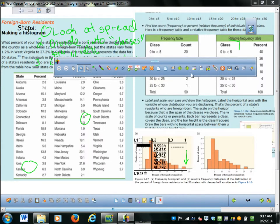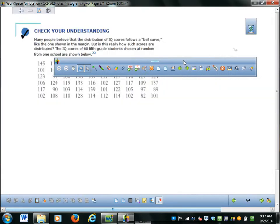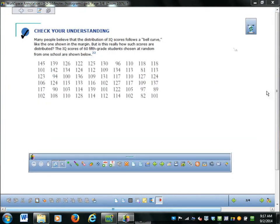I was going to go through some more stuff. Quickly, hopefully, check your understanding. So, we're not going to do this whole problem. But this is IQ scores. And they want to know if it's a bell curve. The IQ scores of 60 fifth grade students chosen at random. How would I divide up, what classes would I divide up these stats into. What's the lowest one? 81. So 81's the lowest. Where's the highest person?